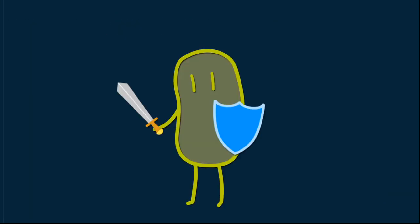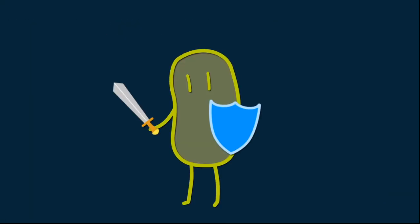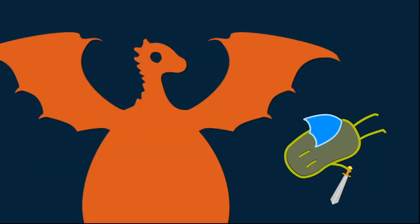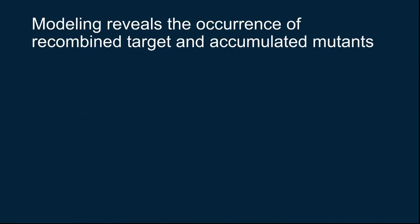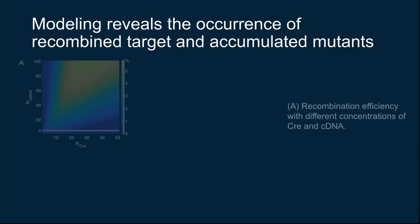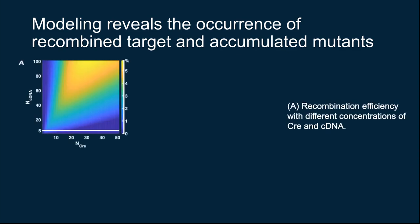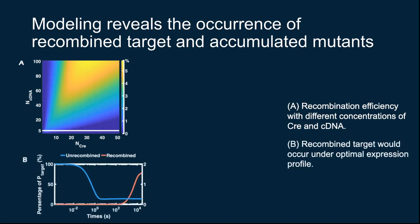Now, our E. coli has obtained both the sharpened sword and the strengthened shield. With courage and confidence, the E. coli strode towards the angry dragon and declared its defeat. Our modeling successfully simulated the system and proved its function. It's demonstrated that the amount of Cre and the cDNA within the cell should be maintained at a ratio of about 2 to 5. This means that Cre should be kept at a relatively low amount, which again proved the necessity of our degradation tag attachment. Under optimal expression level, we can see that recombined target would occur and the mutagenesis process would take place.